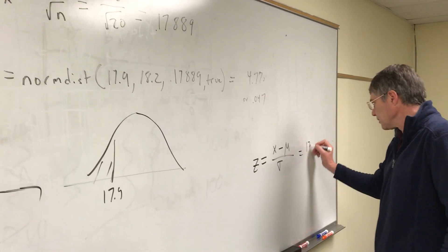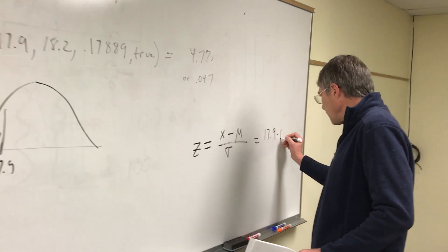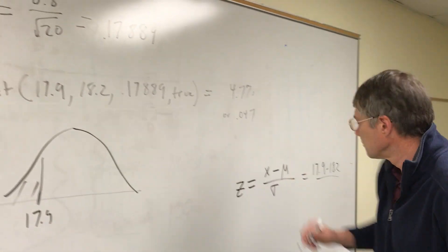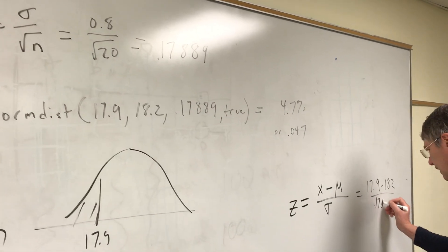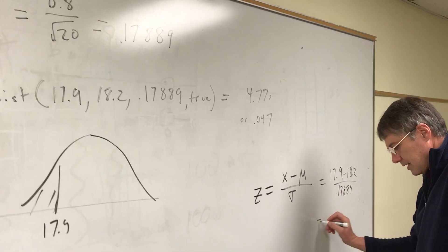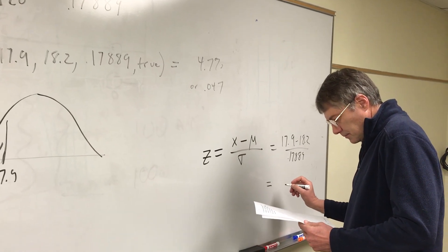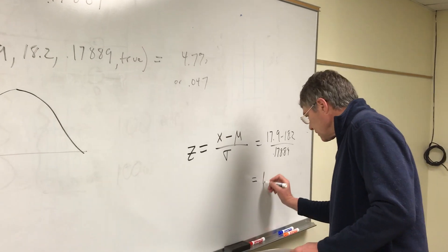So I plug in my number, 17.9 minus 18.2, and then 0.17889. That comes out to 1.68.